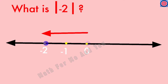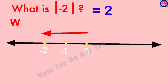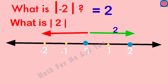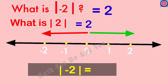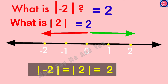What is the absolute value or modulus of minus 2? Absolute value means it is the distance from zero to the number, so it is the distance from zero to minus 2, which is equal to 2 units. So absolute value of minus 2 equals 2. In the same way, the distance from zero to 2 is also 2 units, so absolute value of 2 is also equal to 2. From this: modulus of minus 2 equals modulus of 2 equals 2.